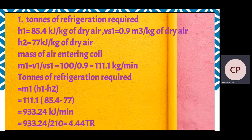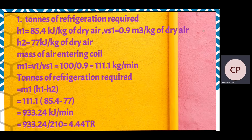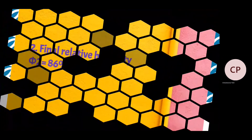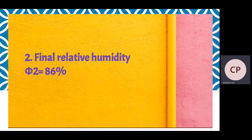Now we calculate tons of refrigeration required. During process 1 to 2, the formula is M1 multiplied by (H1 minus H2), giving 933.24 kJ per minute. Converting to tons of refrigeration by dividing by 210, we get 4.44 TR. The final relative humidity at point 2 is Phi2 equal to 86%.